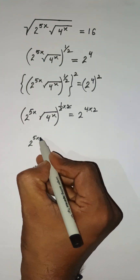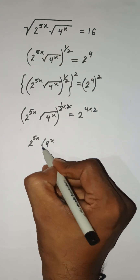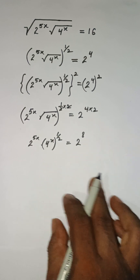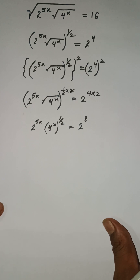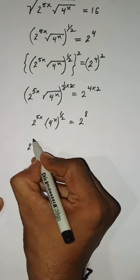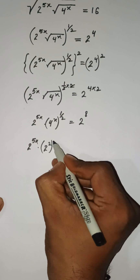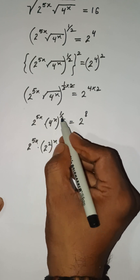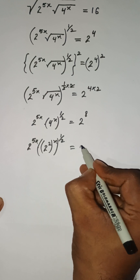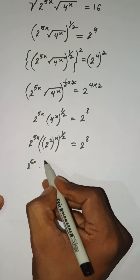Now we have 2 to the power 5x and 4 to the power x, where the square root can be written as power 1 upon 2, equaling 2 to the power 8. We can write 4 as 2 to the power 2, so we have 2 to the power 5x, then 2 to the power 2 to the power x, with overall power 1 by 2, equaling 2 to the power 8.